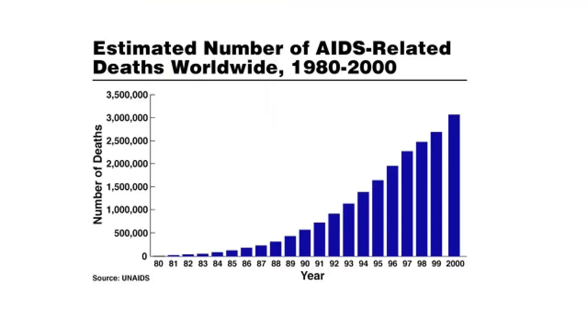This observation led scientists to suspect that HIV has not been a human virus for very long. If it was a virus with a lot of history with humans, it's unlikely that it would still be so pathogenic.